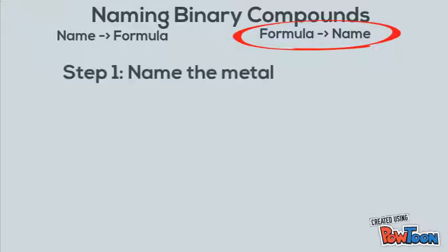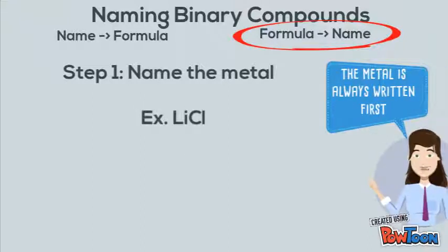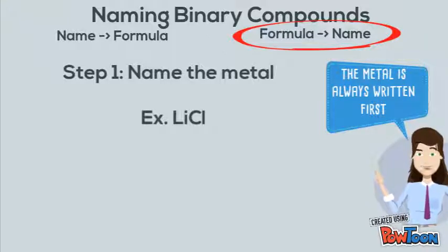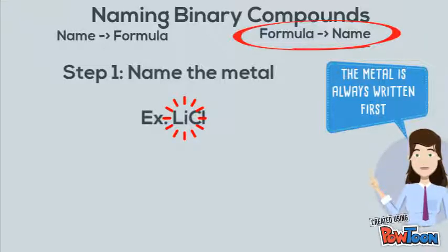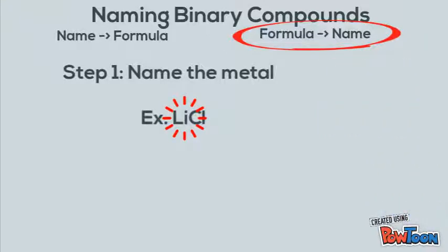Step number one is to name the metal. In our example, LiCl — remember, the metal is always written first. So Li is the metal. We're going to look on the periodic table, look up what Li is, and the answer is lithium. So our metal's name is lithium.